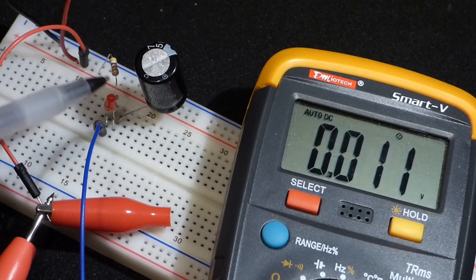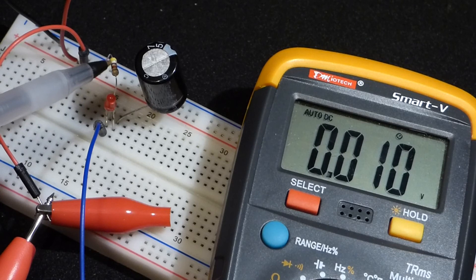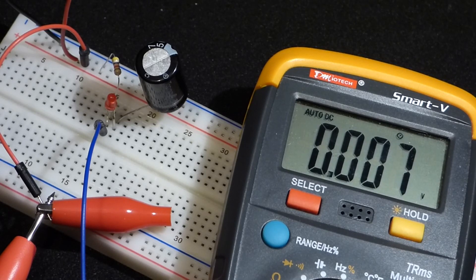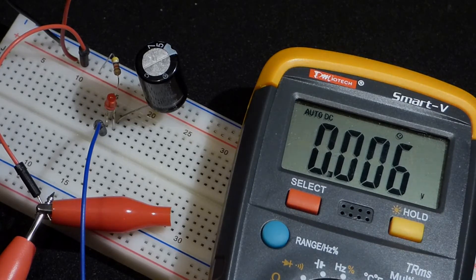As the voltage of the capacitor gets close to the voltage of the battery minus the LED drop, then the voltages on both sides of the resistor equal out. That's why we end up with zero volts across the resistor once the capacitor is fully charged.